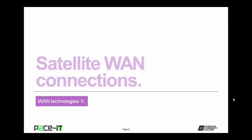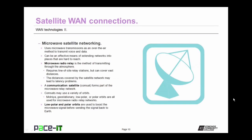Now let's conclude with satellite WAN connections. Satellite WAN connections are a type of microwave satellite networking using microwave transmissions as an over-the-air method of transmitting voice and data — just like WiMAX. It can be an effective means of extending networks into places that are hard to reach, and can cover even more distances than WiMAX because it utilizes a satellite network. However, because of the distances satellite transmissions cover, this can lead to latency problems — the signal has to go from a terrestrial location up to the satellite, probably over to another satellite, and then down to another terrestrial station. That's a significant distance, and there will be some lag.